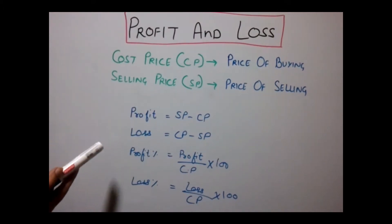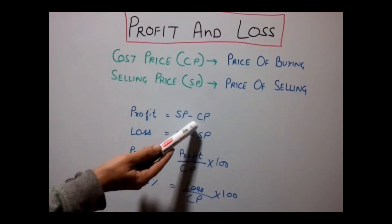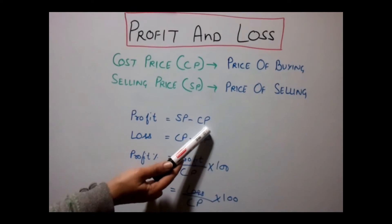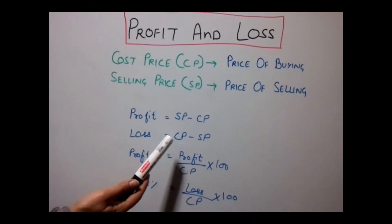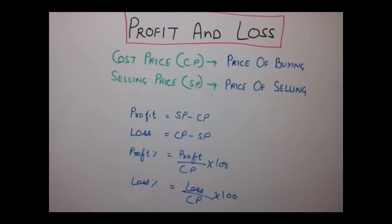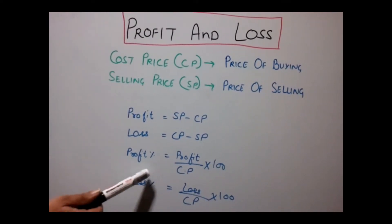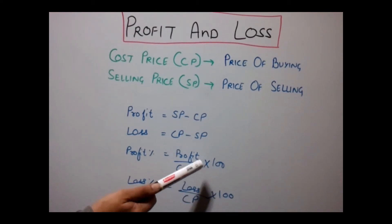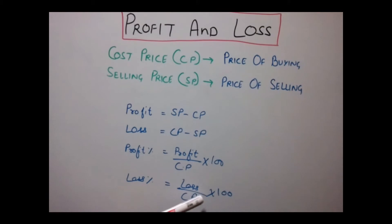Profit occurs when you sell anything above your Cost Price. So Profit equals Selling Price minus Cost Price. Similarly, Loss equals Cost Price minus Selling Price — that is when you sell a product below the cost at which you purchased it. Profit percentage is calculated as Profit divided by CP multiplied by 100, and Loss percentage is calculated as Loss divided by CP multiplied by 100.